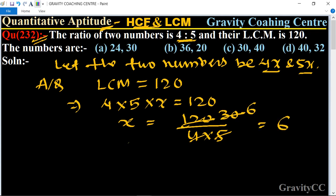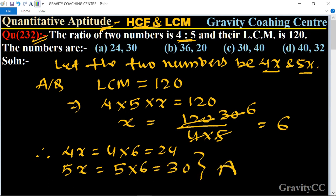4 times 3 is 12 and 5 times 6 is 30, so x is equal to 6. Therefore, 4x is equal to 4 into 6, which is 24, and 5x is equal to 5 into 6, which is 30. So which is the required answer.